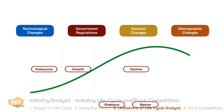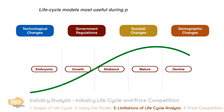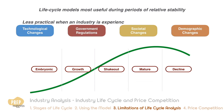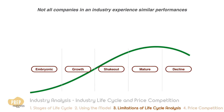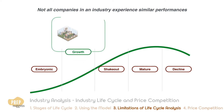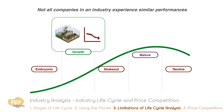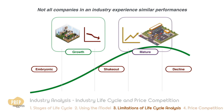Life cycle models tend to be more useful for analyzing industries during periods of relative stability, and less practical when an industry is experiencing change due to external factors. Another limitation is that not all companies in an industry experience similar performance. A company can be in a growth industry but grow much slower than the industry average, or conversely, a good company can be in a mature or declining industry but is growing rapidly. The key objective for an analyst is to identify potential winners while avoiding potential losers.